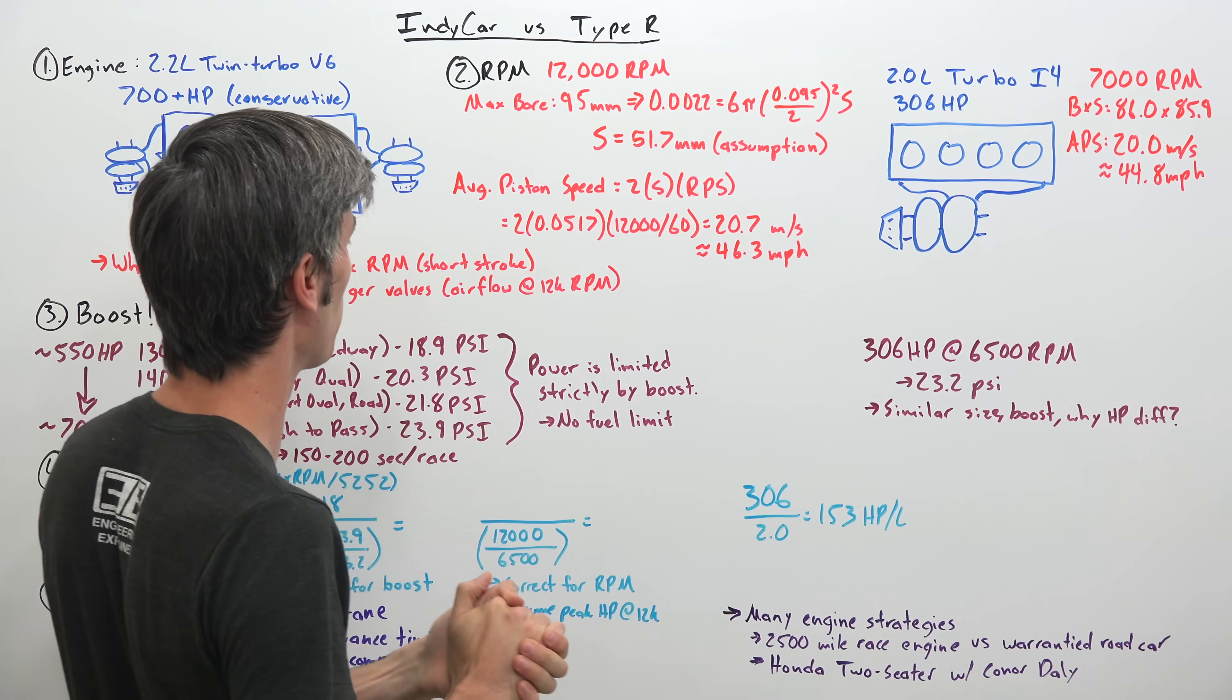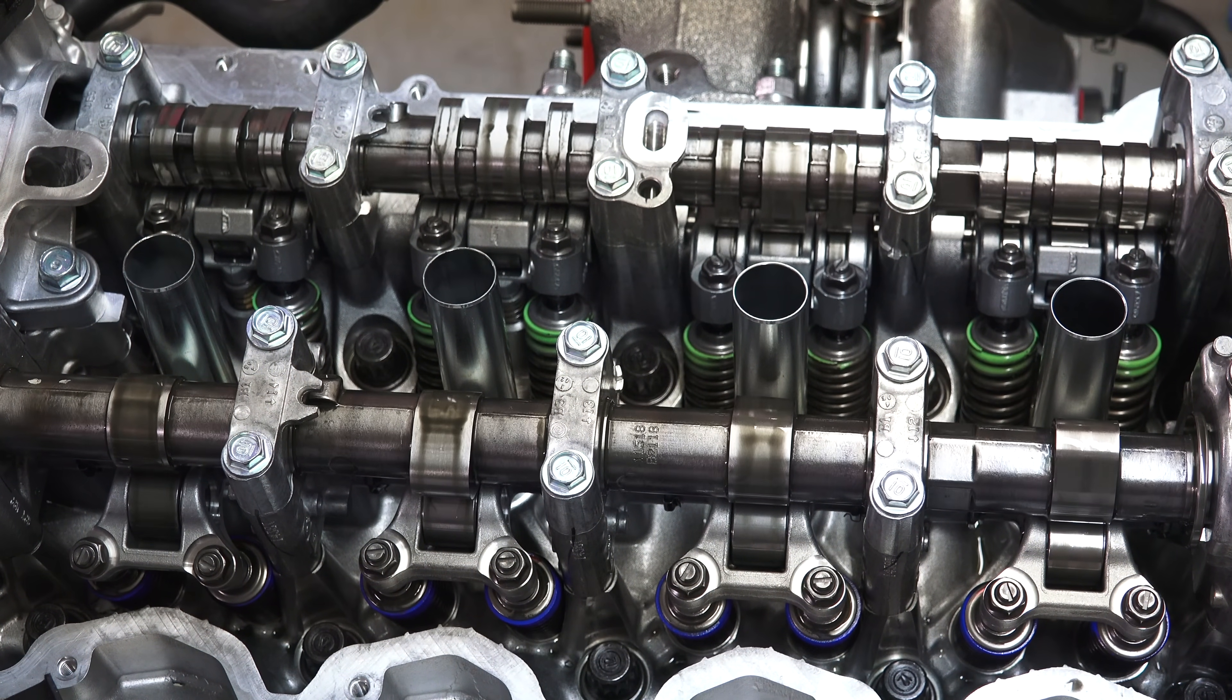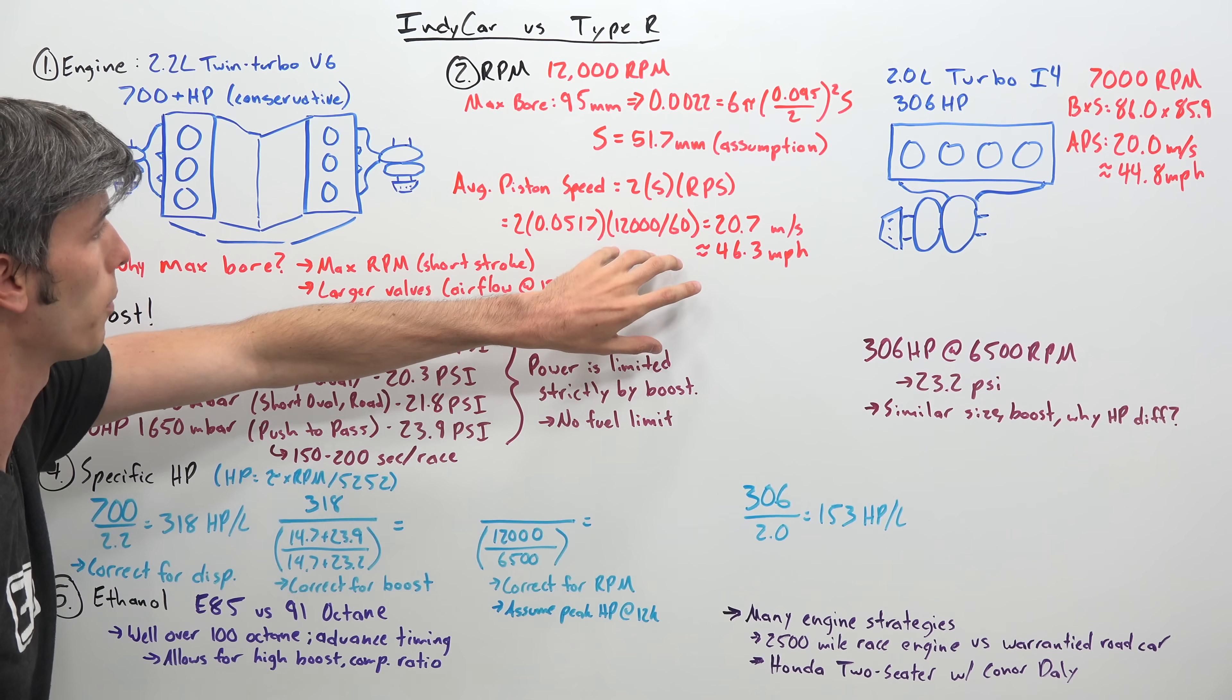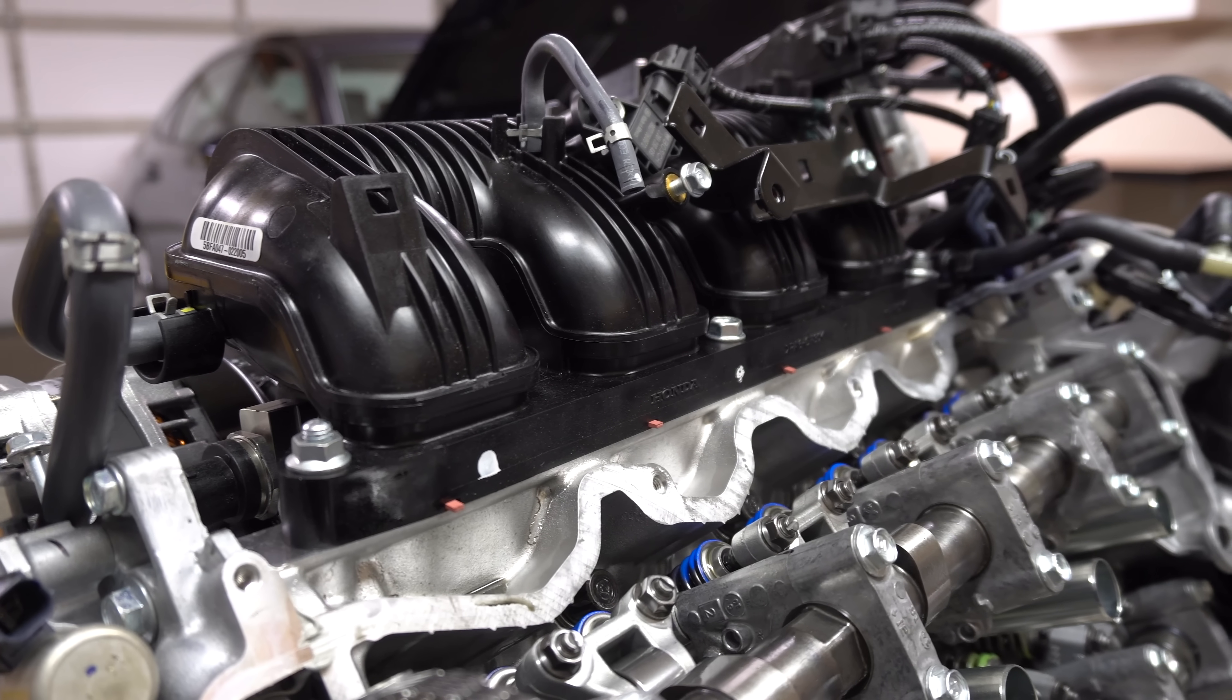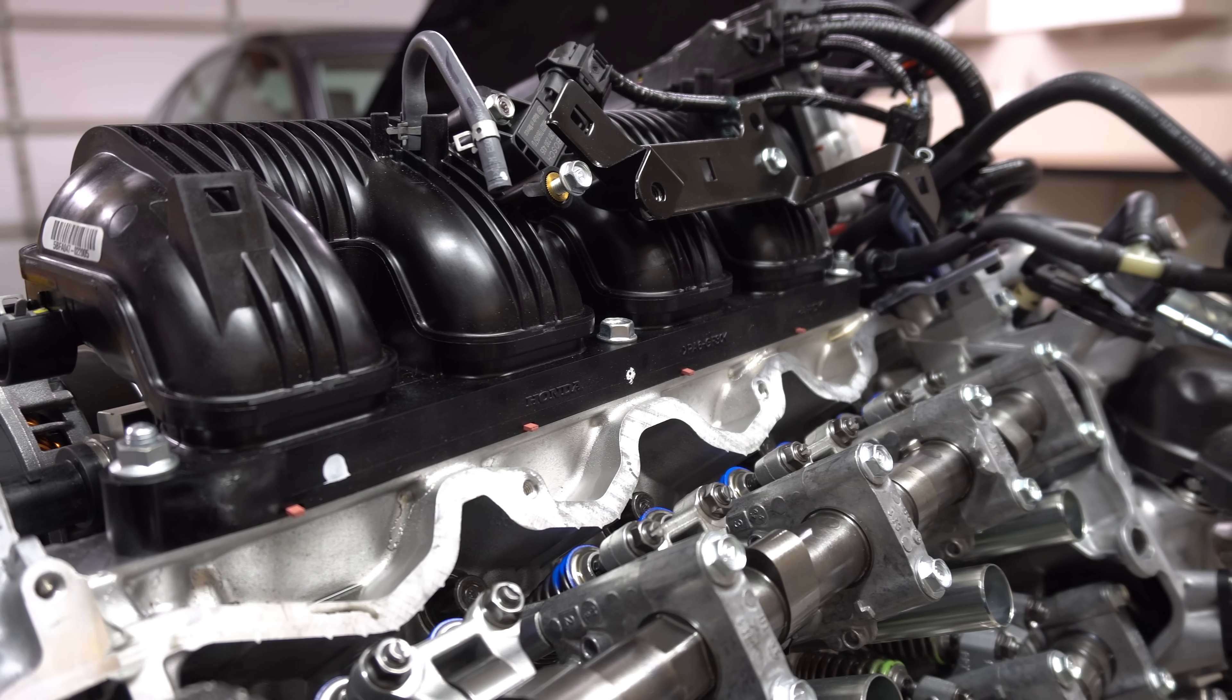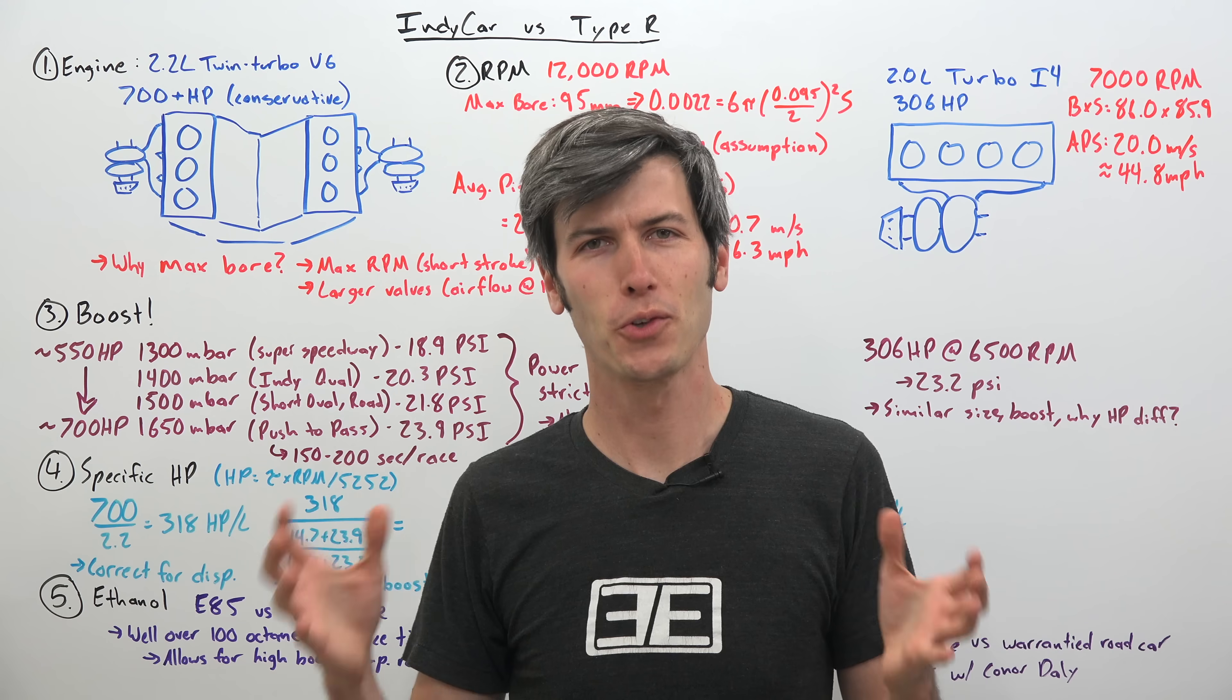Now why might Honda choose to use that maximum 95 millimeter bore? Well of course as I explained to allow for that 12,000 rpm, to allow for those higher engine speeds, but also to allow for larger valves. So if they use larger valves then they can have better airflow within that engine, which is of course very important when you're revving up to 12,000.